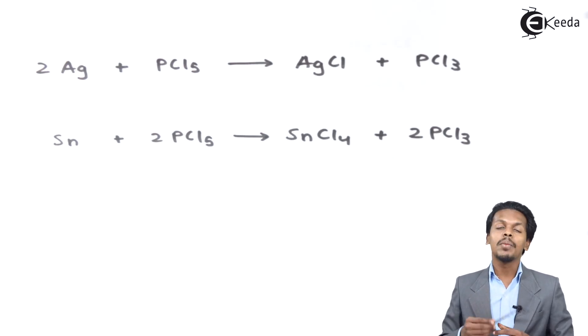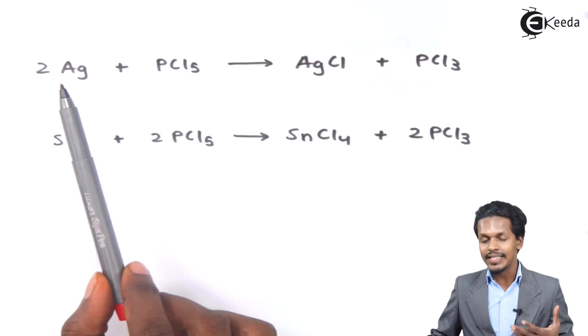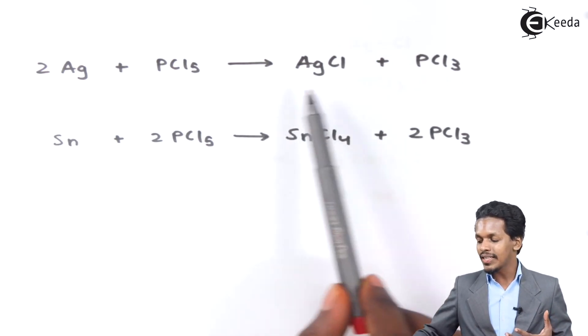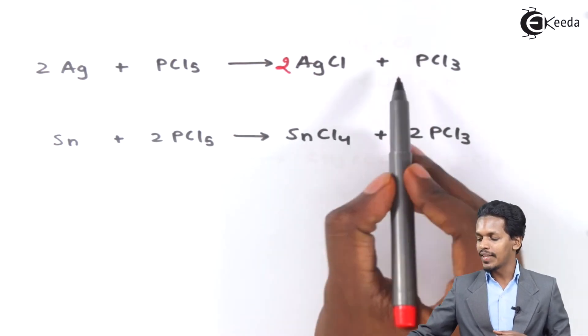Phosphorus pentachloride is very reactive to metals. In this case, PCl5 whenever it is reacted with silver, that is 2 moles of Ag, the product we get is 2 moles of AgCl along with PCl3.